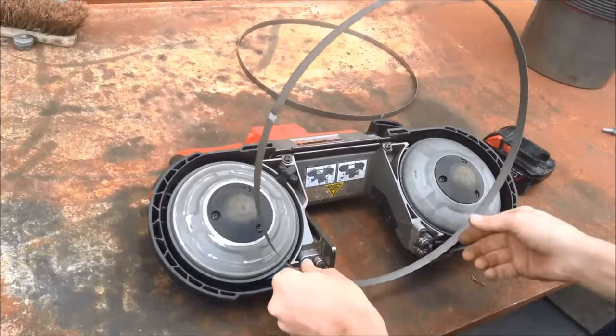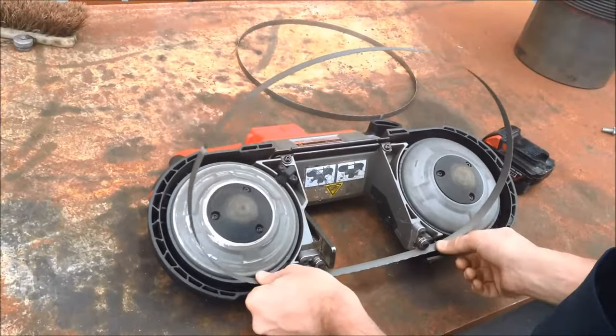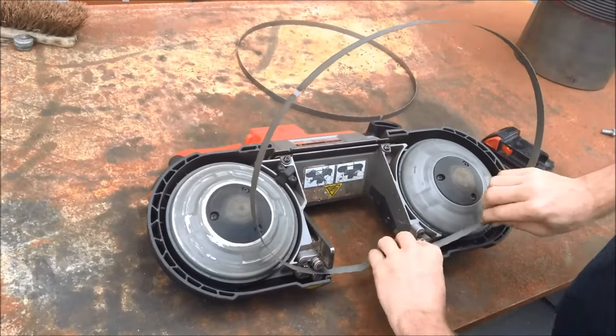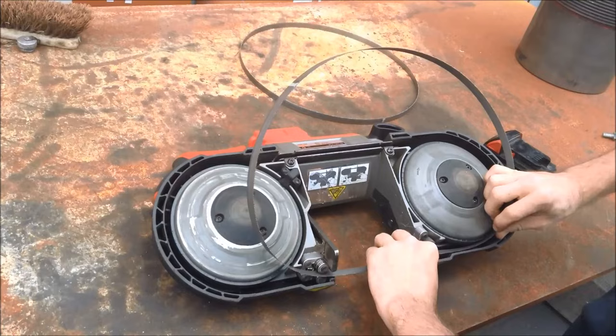Grab your new blade. Insert it into the first half of the idler bearings here, just so you've got flexibility for it. Then bring them around the drive wheels.